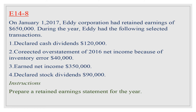In the retained earnings statement, we start with the beginning balance of retained earnings, plus or minus the correction of prior year errors, plus the net income of the year, minus dividends — both cash dividends and stock dividends.